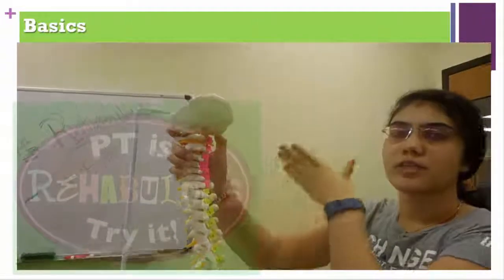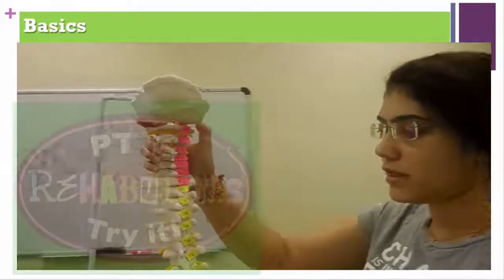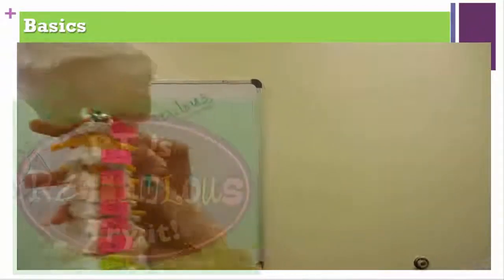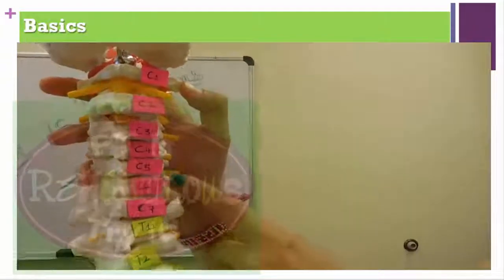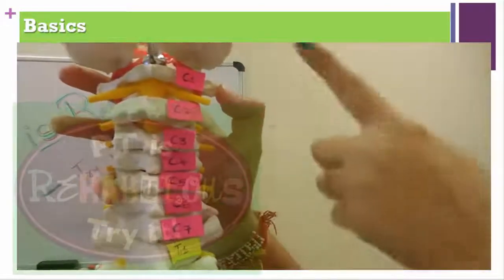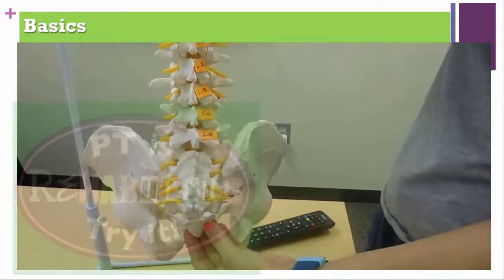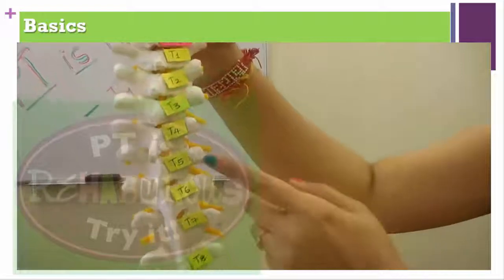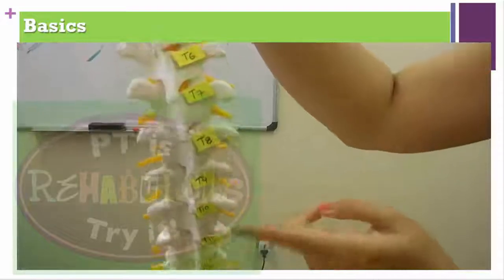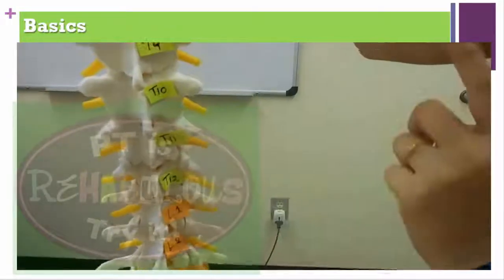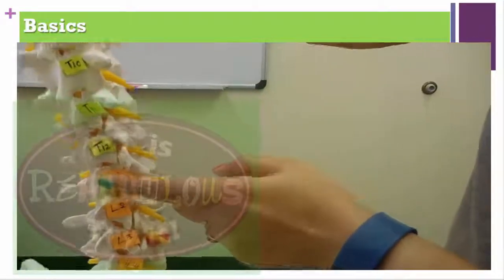Now we are going to see the basics of the spine using a spine model, which is an easier way to remember spinal mobilization. We have 7 cervical, 12 thoracic, 5 lumbar, 5 sacral, and 4 coccygeal vertebrae. On the model: C0 is the skull, followed by C1 through C7, then T1 through T12, and L1 through L5.